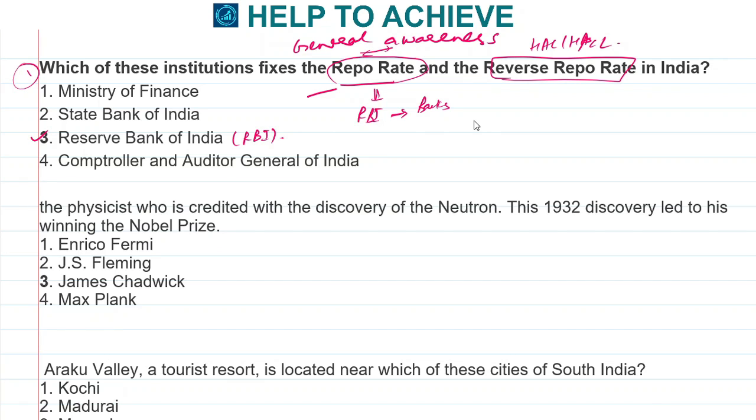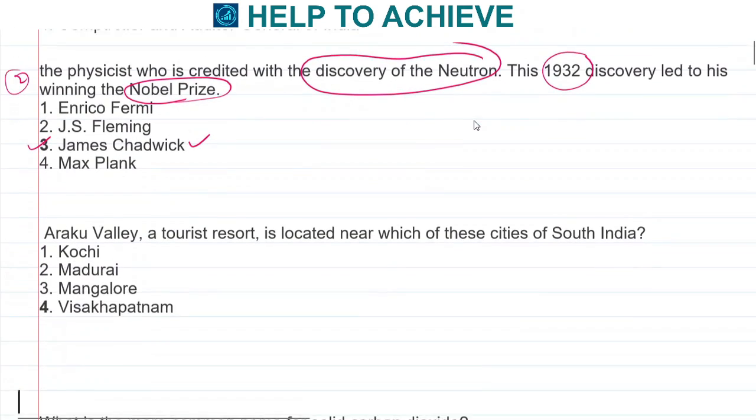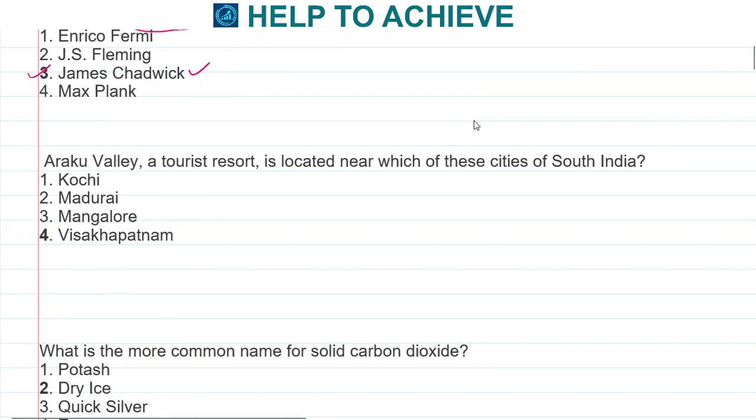Next, the physicist who is credited with the discovery of the neutron. Discovery of neutron happened in the year 1932 and the scientist, a physicist, was also given a Nobel Prize. The answer is James Chadwick.